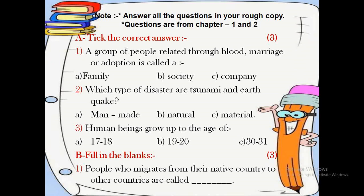Question number 1 is: a group of people related through blood, marriage or adoption is called a dash. Option A: family, Option B: society, or Option C: company.